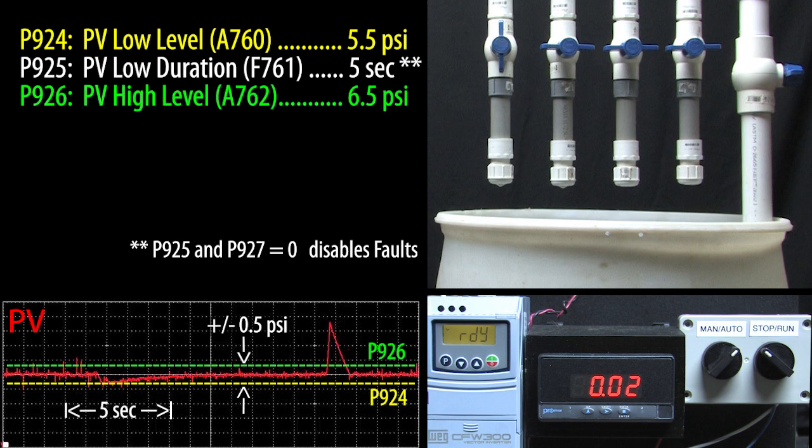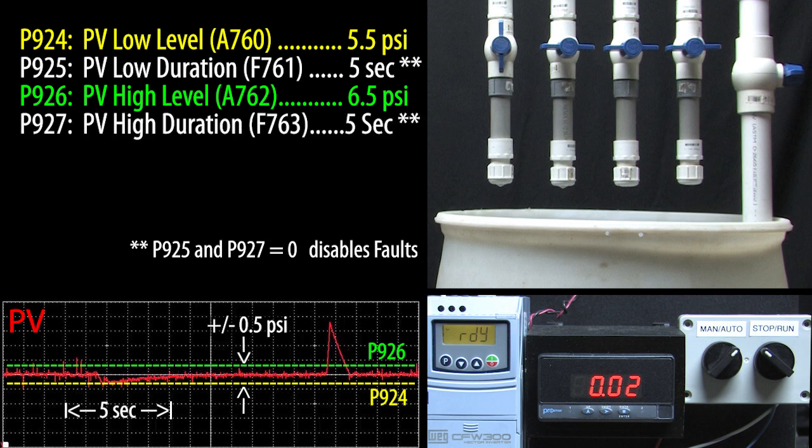Parameter 926 is the high side so we'll set that to 6.5 PSI. And parameter 927 is the duration of the high side. We want 5 seconds for that one too. It doesn't have to be the same as the low side. I just did that for this demo.